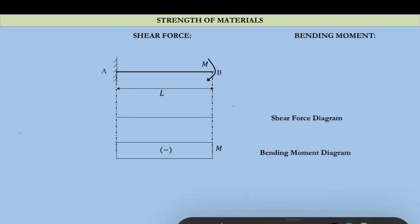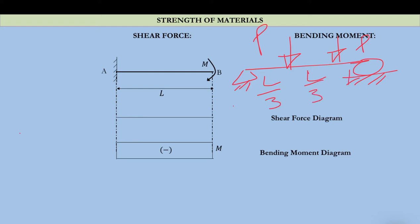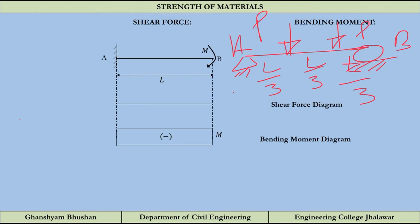I would like to give you a small question: draw the bending moment diagram for a beam divided into three equal spans of l/3 each, with load applied at l/3 from both ends. You have to calculate for which section pure bending exists — whether it is there or not, first you have to check. Comment your answer; if you are not able to get it, ask me and I will explain.